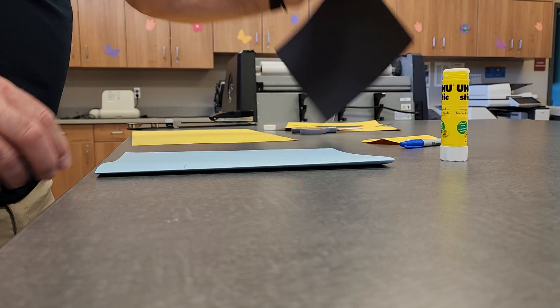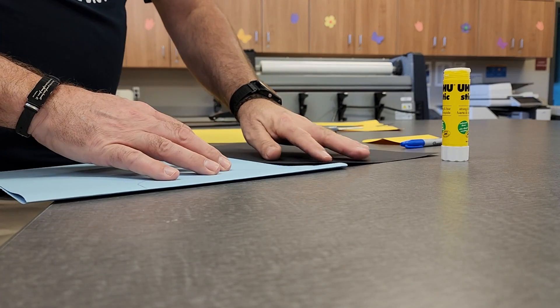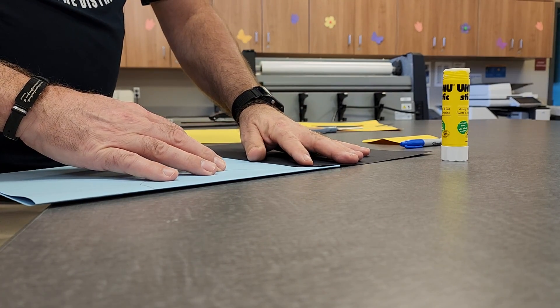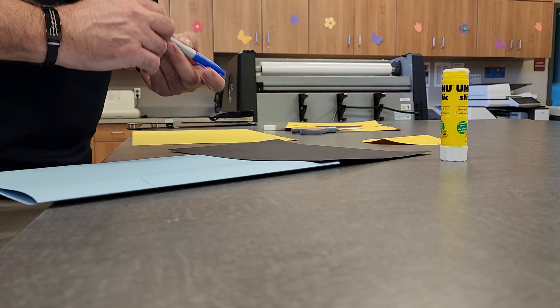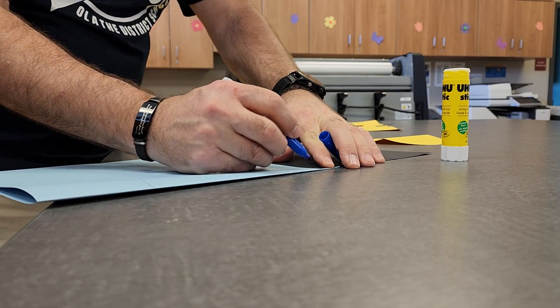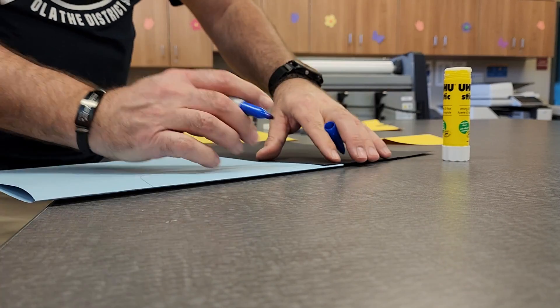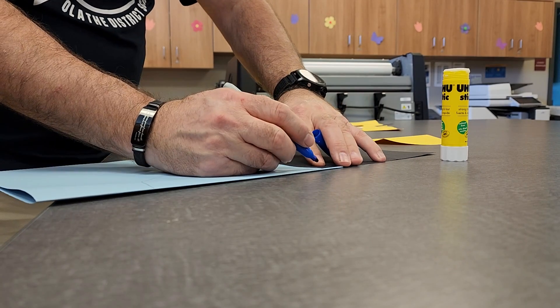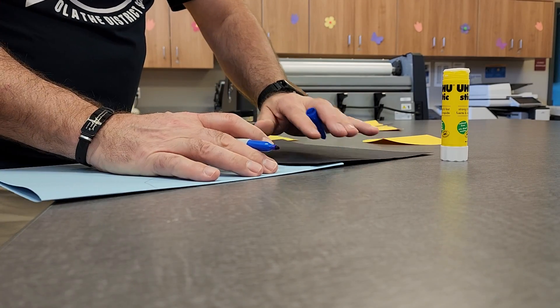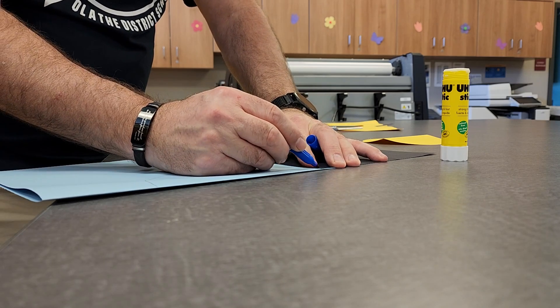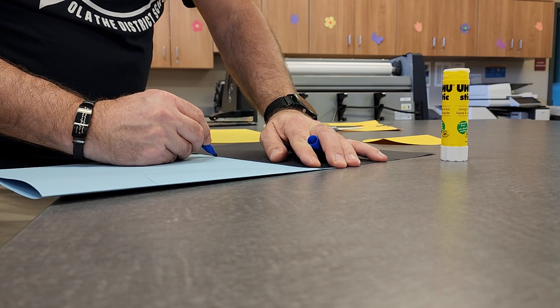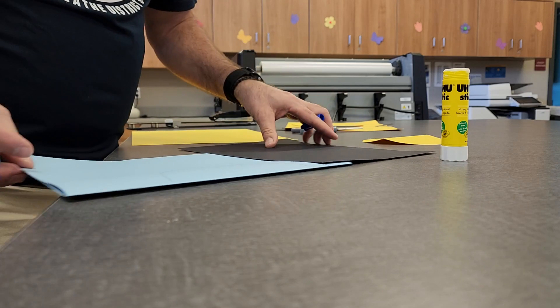And then what you're going to do is, a ruler works best, but when you don't plan on having a ruler, you do with what you got. So you're going to go about an inch above and an inch below, or you can go a little less above, but you definitely want an inch below. And you're going to go about seven inches on your paper and then stop.